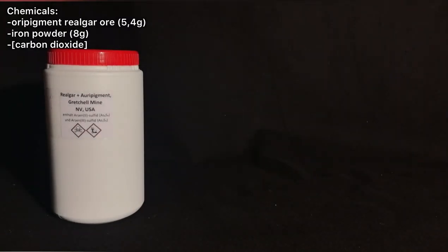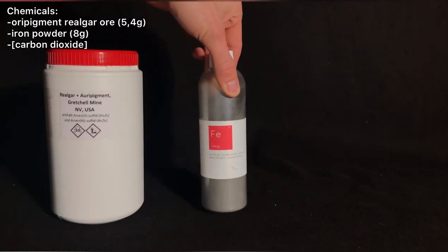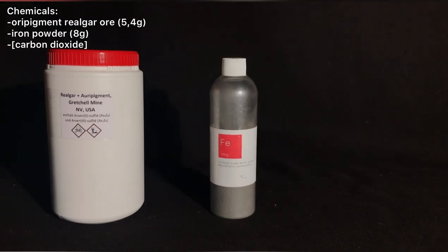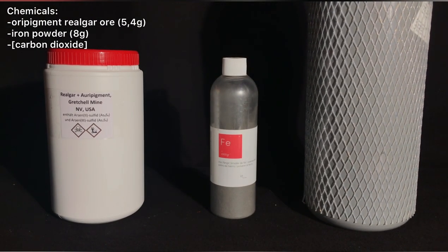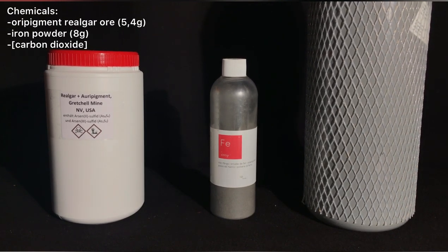Welcome back everyone, today we are going to make some elemental arsenic. For this we are going to need 5.4 grams of mixed ore pigment realgar ore, 8 grams of iron powder which is a huge overkill, and some carbon dioxide for the inert atmosphere.